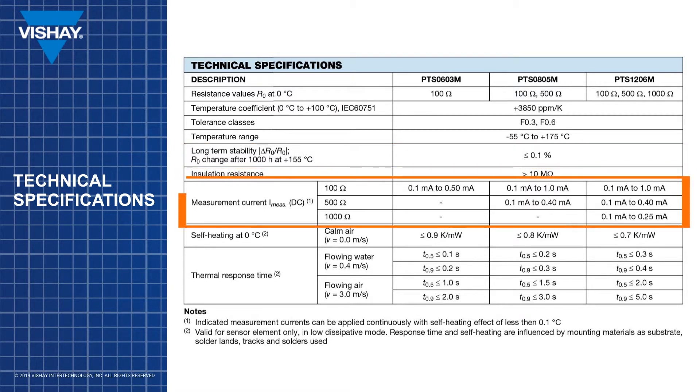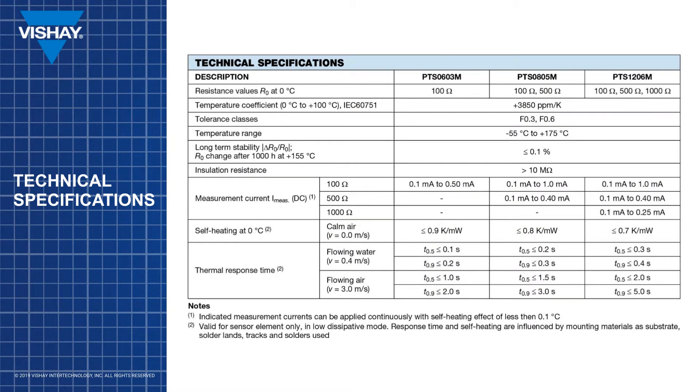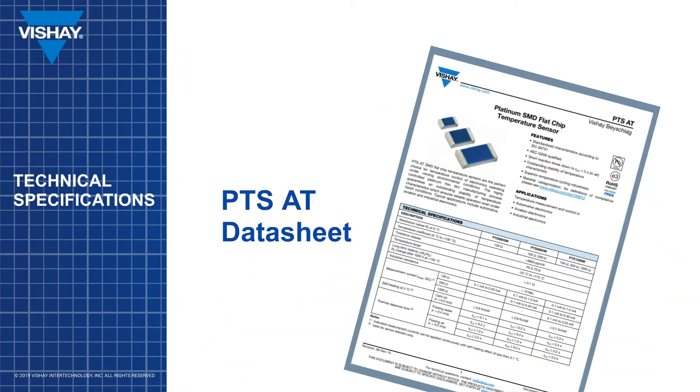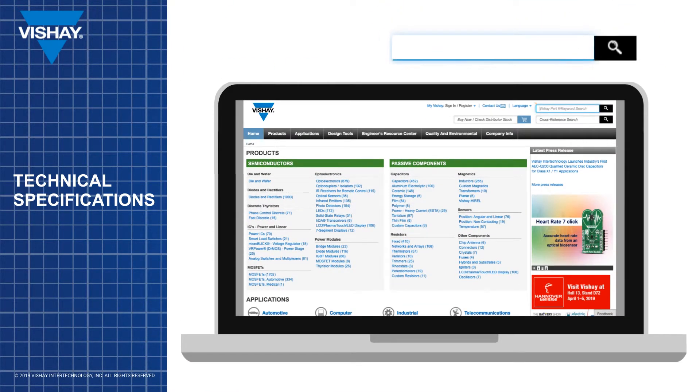The measurement current is dependent on the size and value of the sensor. The measurement currents listed can be applied continuously with minimum self-heating effects. The thermal response time of the sensor is less than or equal to 2 seconds in flowing air. To view the complete PTS-AT data sheet online visit vishay.com and enter PTS in the search box on the top right.